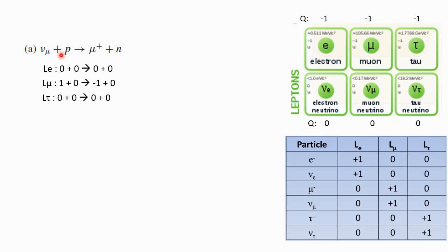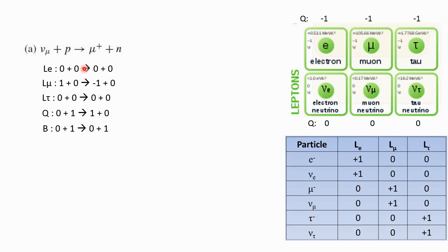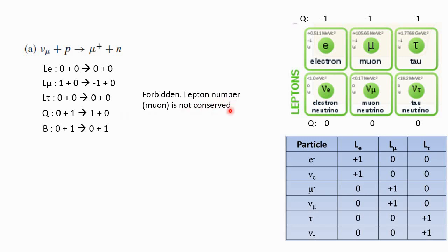Let's take a look at the tau number — there is no tau here, so everything is zero. Then the charge: muon neutrino has zero charge, and proton has positive one charge. Muon is negative one charge but anti-muon is positive one charge, so charge is conserved. For baryon number: muon neutrino is not a baryon, but proton is a baryon and neutron is also a baryon, so it must be one and one. So the reaction is not allowed — it is forbidden because the lepton number is not conserved.